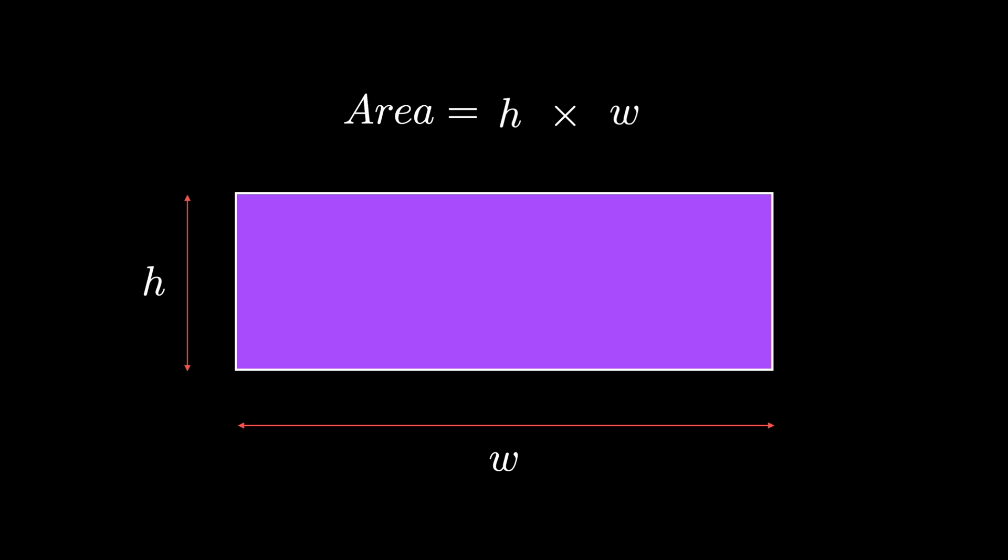It's worth noting that the Ahmes papyrus doesn't state problems in terms of variables. It rather states them in terms of specific numbers. And the numbers used for this rectangle is a height of 2 ket, which is an ancient Egyptian unit, and a width of 10.